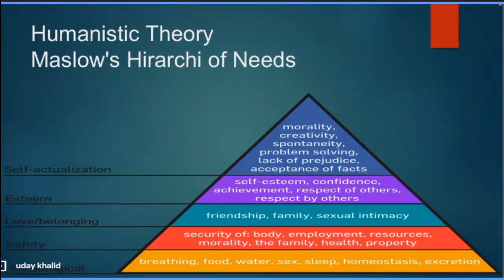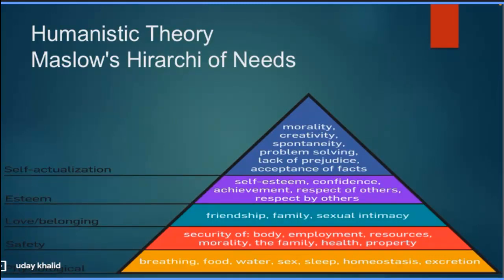Now we move to Maslow's hierarchy of needs — one of the main humanistic theories. This theory understands development as stages of fulfillment of needs. There are needs that must be fulfilled in a hierarchical order.